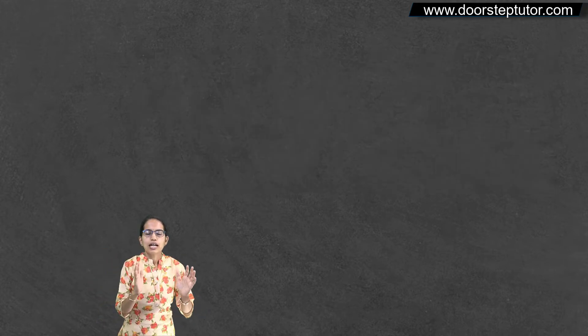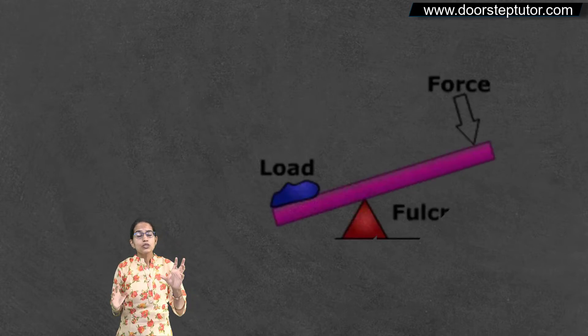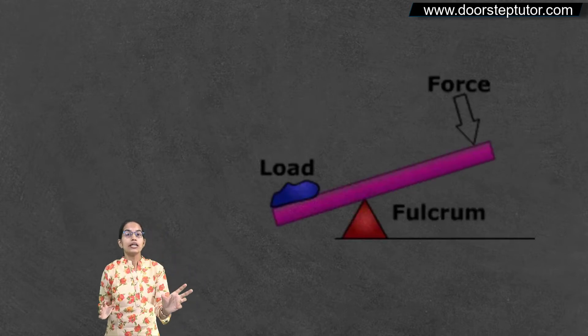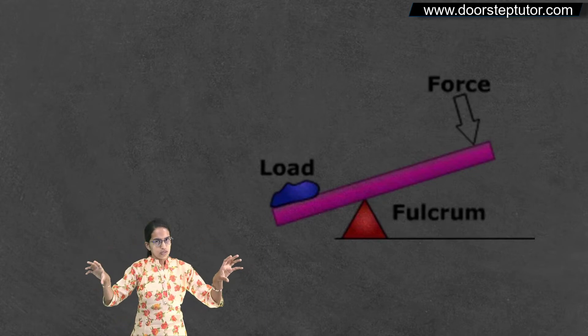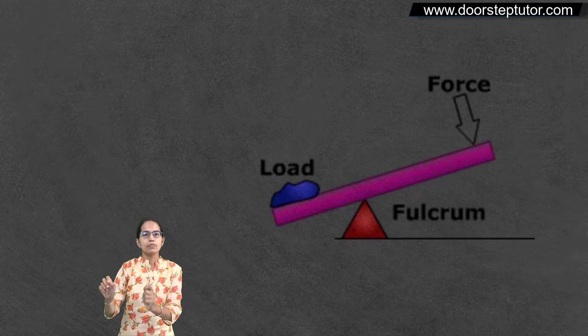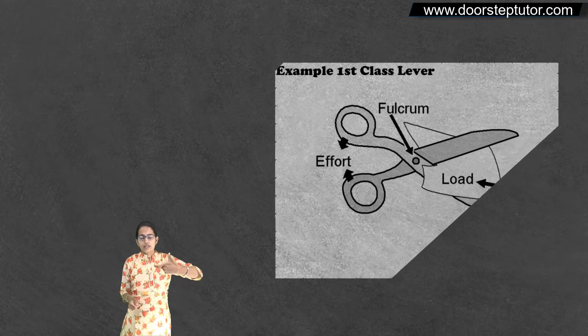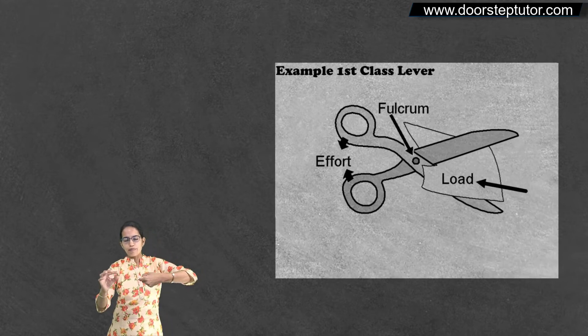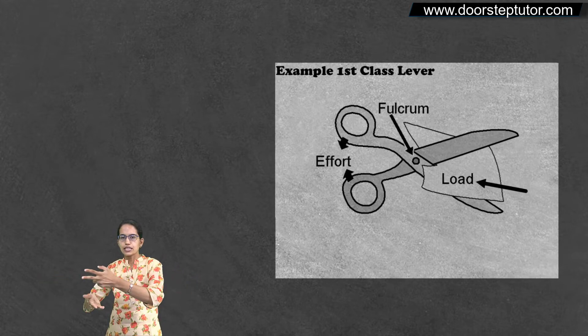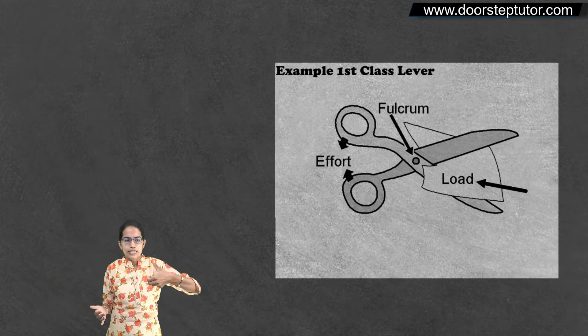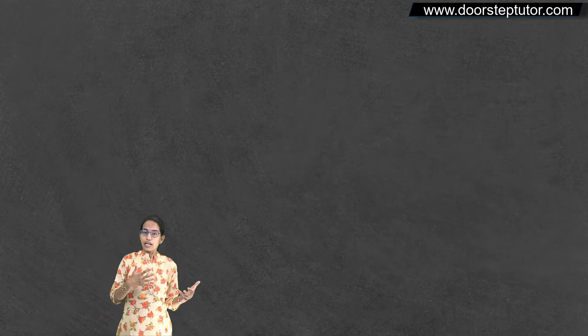The very first is the class 1 lever. Class 1 lever is the case where fulcrum is in between the load and the effort. What's a good example? Scissor. When I am moving the scissor, the fulcrum is in between. On one side I am putting the effort. On the other side where the paper is cutting is the load. So scissor is an example of class 1 lever.